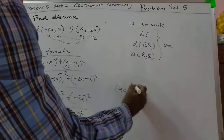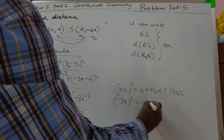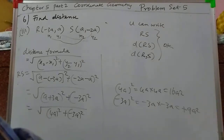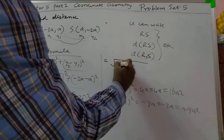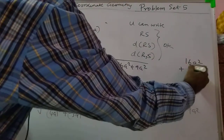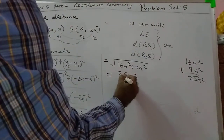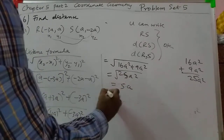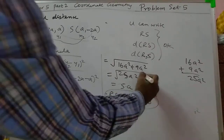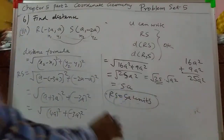Now 4a the whole square equals 4a × 4a, that is 16a². And minus 3a the whole square equals minus 3a × minus 3a, that is plus 9a². So 16a² plus 9a² equals 25a². Therefore the distance is √(25a²) = 5a units. Next we have Problem 7.